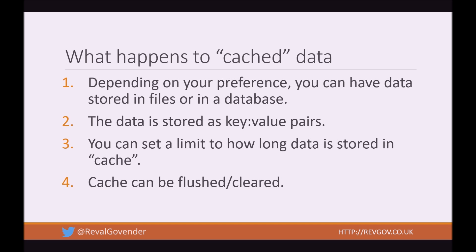So what happens to cached data? Depending on your preference, you can have data stored in files or in a database. The data is stored as key-value pairs. You can set a limit to how long data is stored in cache, and the cache can be flushed or cleared at any time.